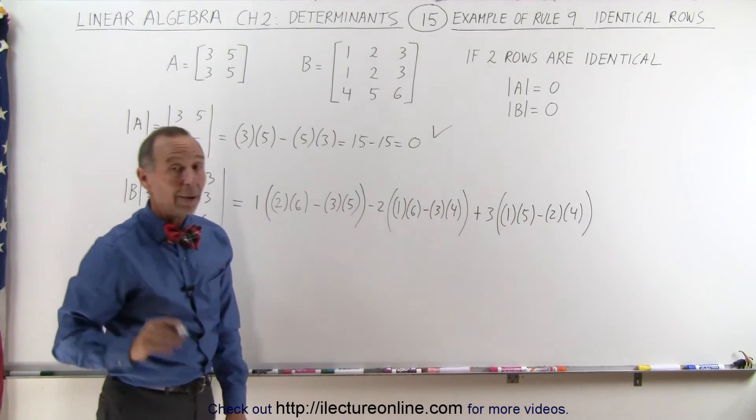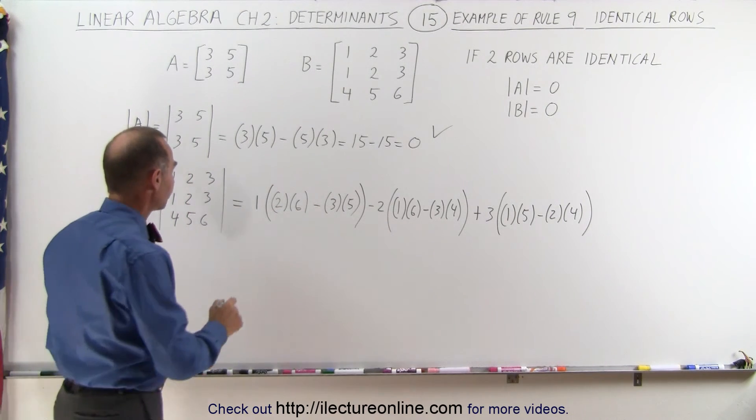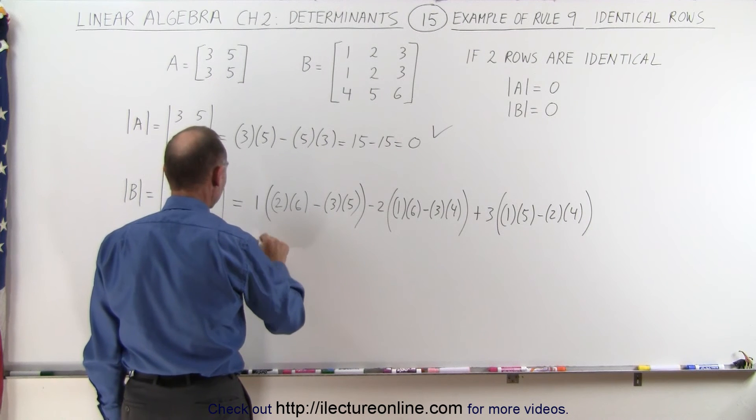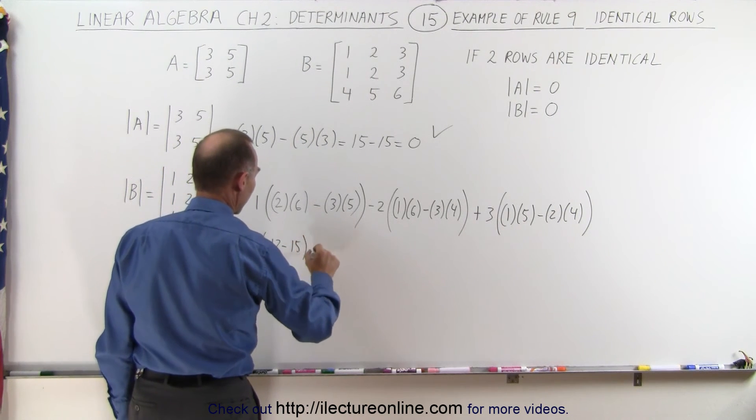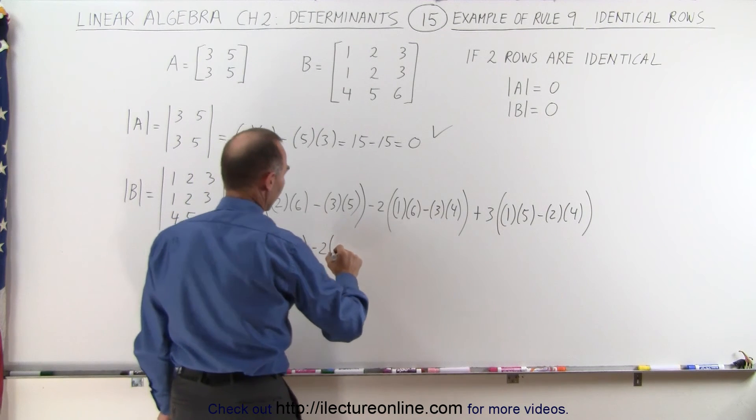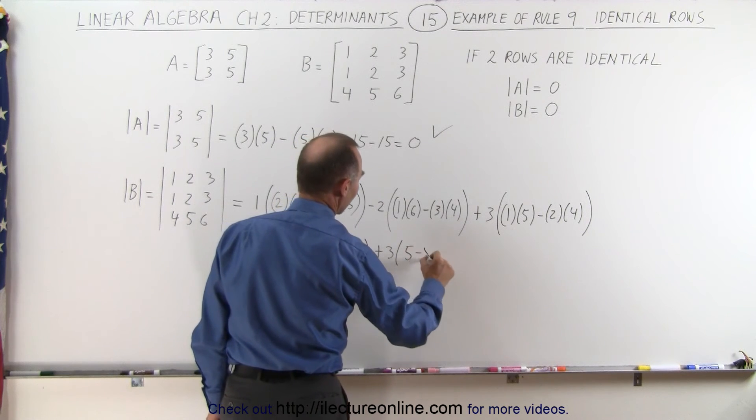Alright, now we're ready to go ahead and work this out to see if that also equals zero. This is equal to 1 times (12 minus 15) minus 2 times (6 minus 12) plus 3 times (5 minus 8).